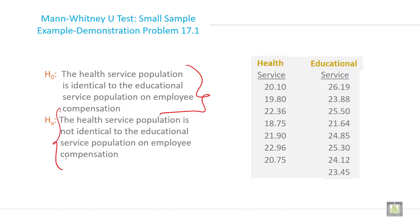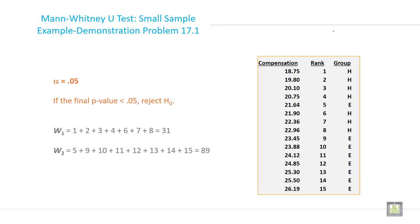The data is given here. It is the health service data and educational service data. Now the alpha, the type 1 error rate, is 0.05. If the final p-value is less than 0.05, reject the null hypothesis.